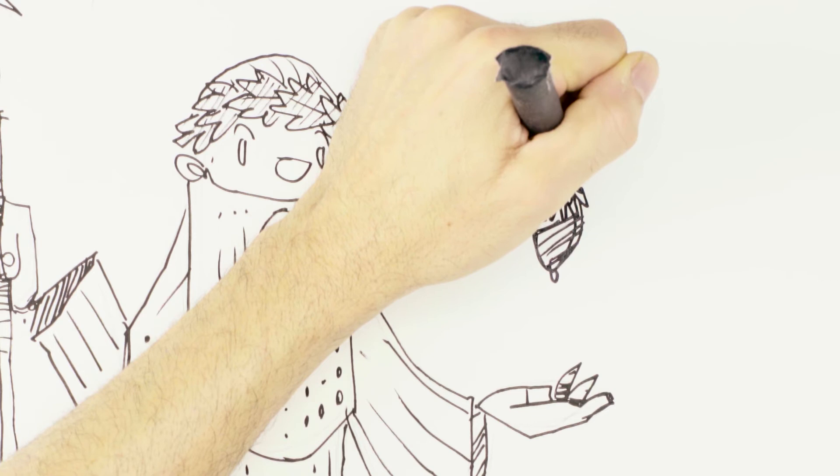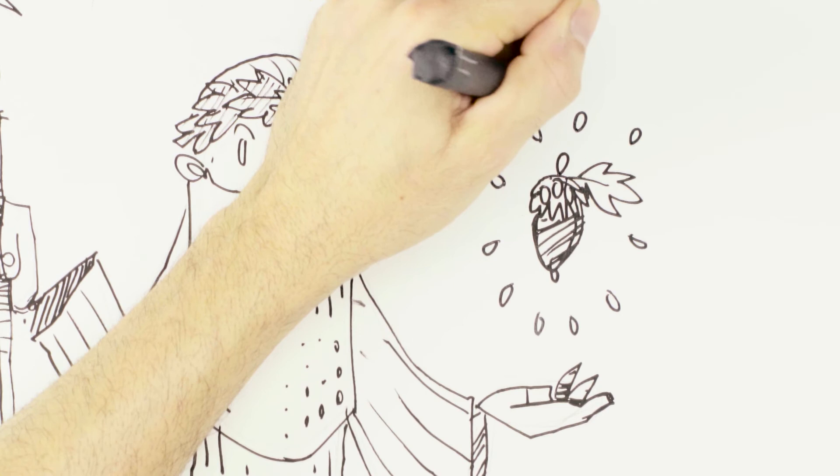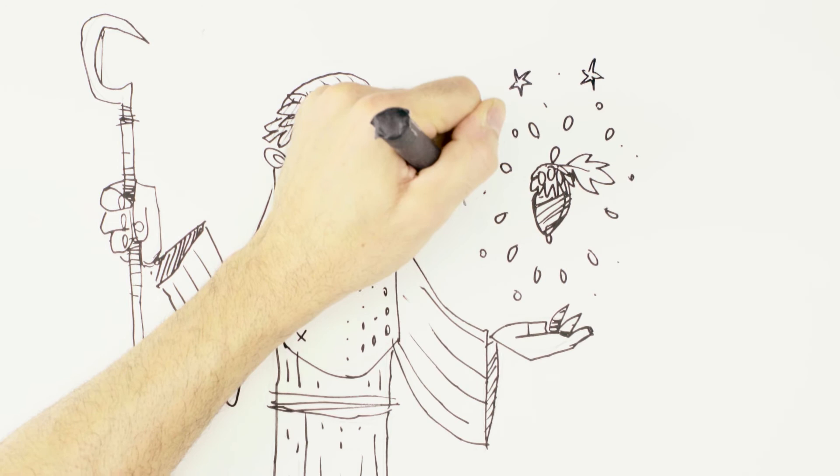A little oak leaf there. And then these are the international levitation symbols here to show that it's actually hovering above his hand. Maybe even a couple of stars because stars are very magical. And there you have it. And then we'll do a little bit of a shadow here to give it that feeling of depth.